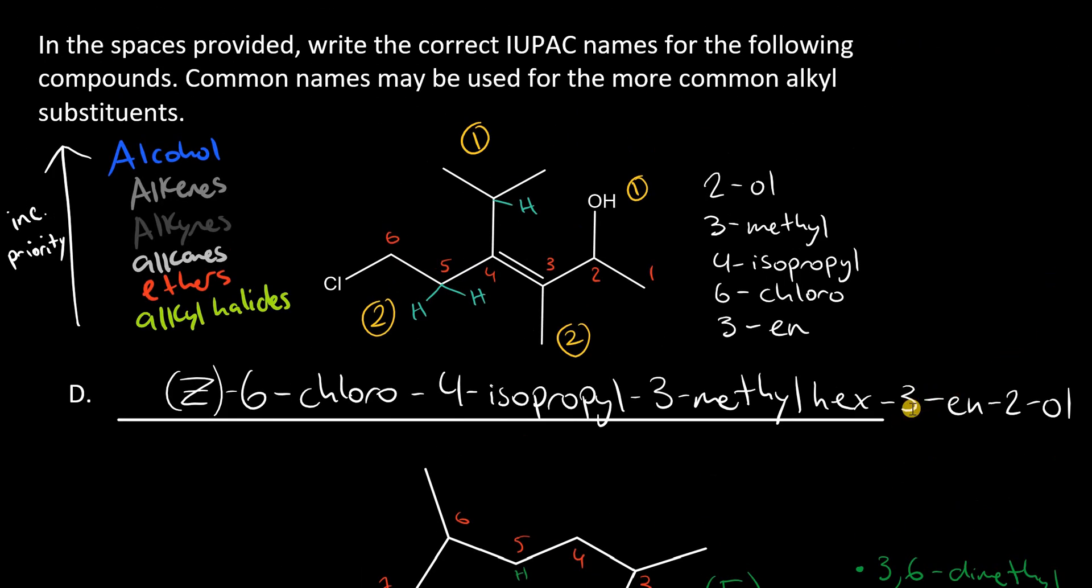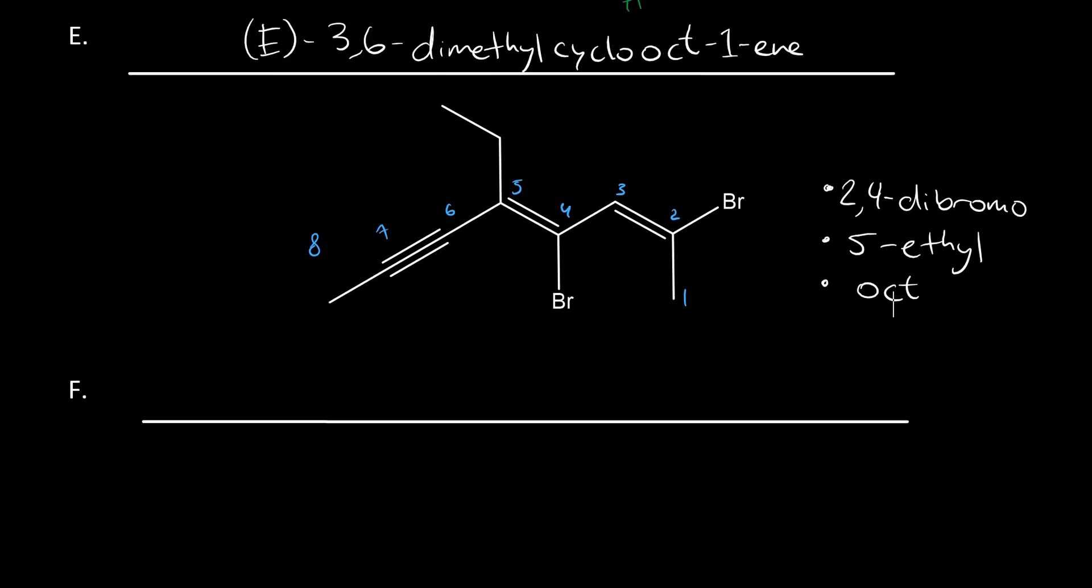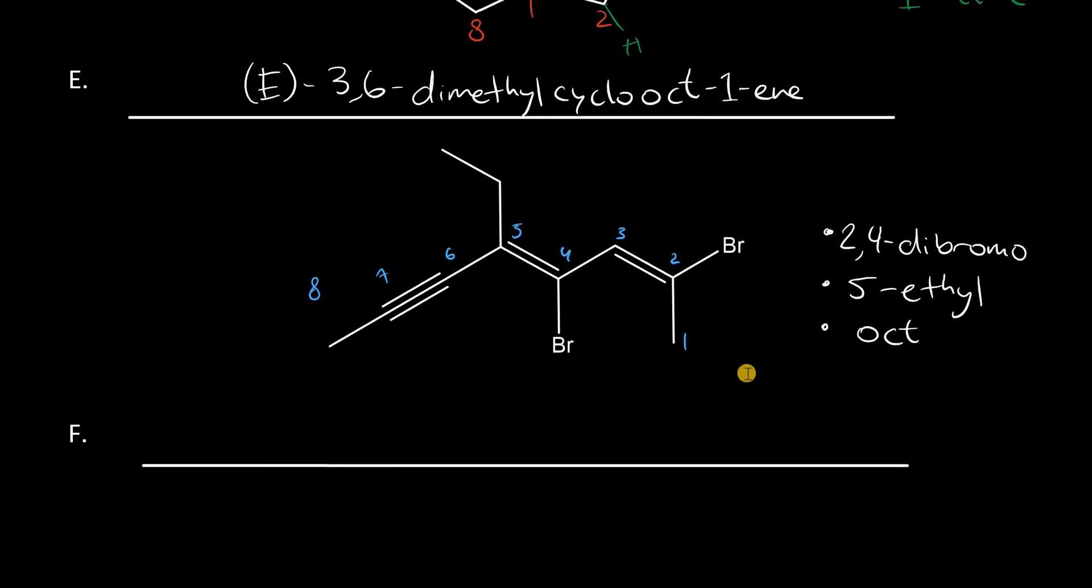We have bromines at carbons 2 and 4. We have an ethyl group at carbon 5. And, our longest carbon chain has 8 carbons. So, it's an oct as the prefix. Now, just like we named this compound here with the 3 and then the ene followed by 2 and ol because we had many functional groups, we can do the same thing here with the double and triple bonds. So, the double bonds occur at carbons 2 and 4 and it's a diene, but we leave out the last e. The alkyne is at carbon 6, so we can write that in, 6, followed by its suffix, yne.